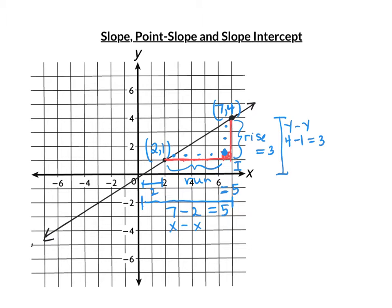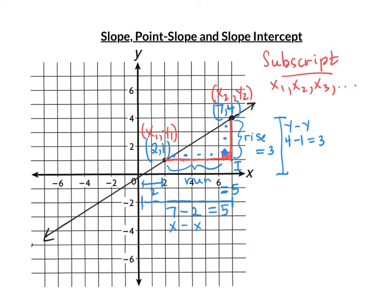What they wanted to do was turn this into a formula. They needed some variables, so they called one point x2, y2 and the other x1, y1. The notation x1, y1 is called subscript. Subscript gives us the ability to have an infinite number of variables with one letter — x1, x2, x3 are just different variables like a, b, and c.